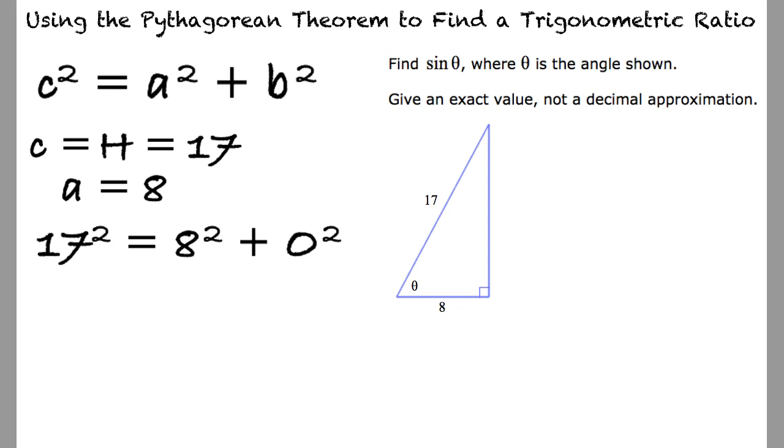Simplifying this equation yields o equals the square root of 17 squared minus 8 squared, which results in o equals 15.